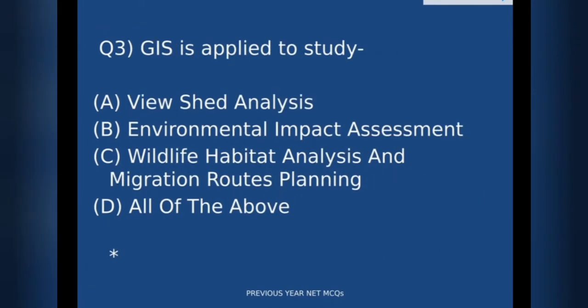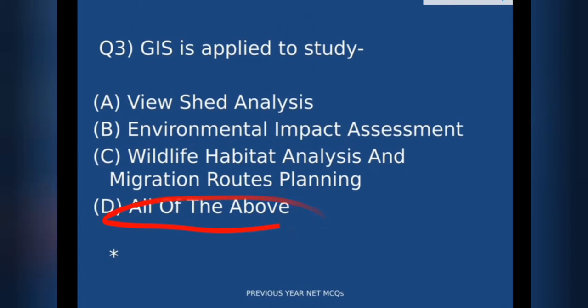The third question: GIS is applied to study — A) viewshed analysis, B) environmental impact assessment, C) wildlife habitat analysis and migration routes planning, or D) all of the above. GIS, that is Geographic Information System, is used for all of the above.